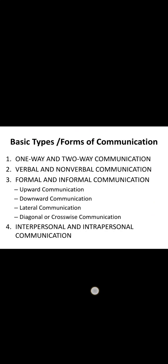Now we will understand the basic types or forms of communication. The first one is one-way communication, where one person communicates and the other person is only listening. For example, television advertisements are one-way communication — the advertiser advertises and the audience just listens. Two-way communication is where both sides communicate: the sender sends the message and the receiver also interacts and gives answers or feedback.